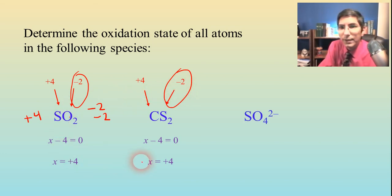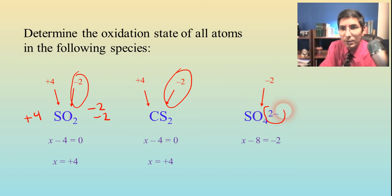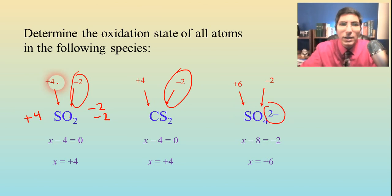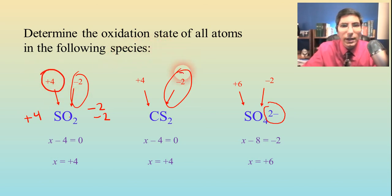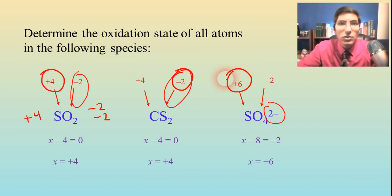Here's our last example: the sulfate polyatomic ion. The one we're most sure of is oxygen — that's a minus two. So we solve for sulfur, calling that X. Four oxygens at minus two would be minus eight, and the whole thing adds up to minus two because that's the ion's charge. Solving for X gives us sulfur as positive six. Interestingly, sulfur appeared in all three of these last examples, but in every case it had a different oxidation state — positive four, then negative two, and here positive six. You couldn't have predicted that just by looking at the periodic table.